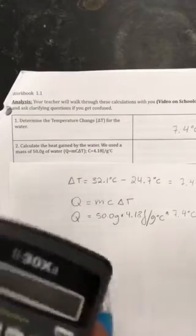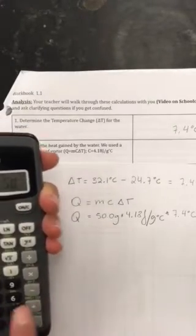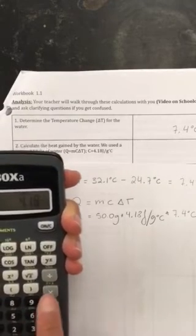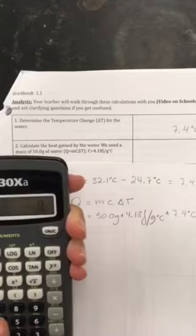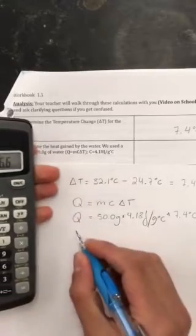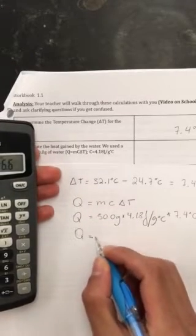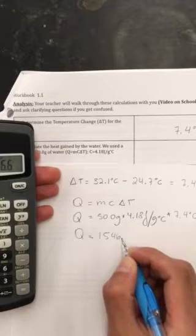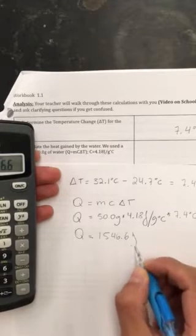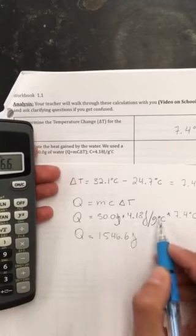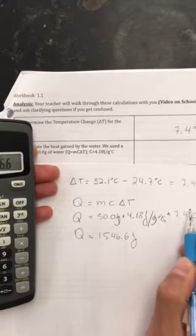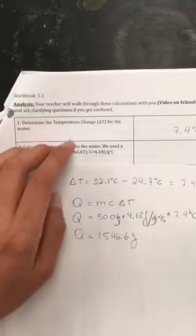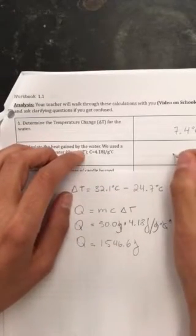So all you need to do is multiply those three numbers and you get 50.0 times 4.18 times 7.4 and you get heat equals 1546.6, and the unit is joules because grams cancel with grams, Celsius cancel with Celsius, and your final unit is joules. So that would be the number that goes in here.